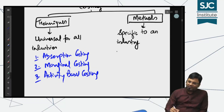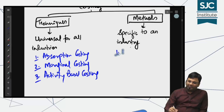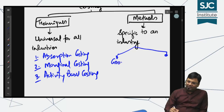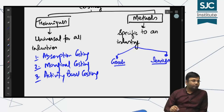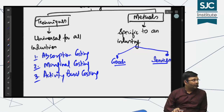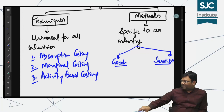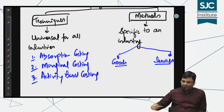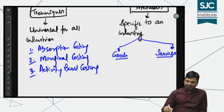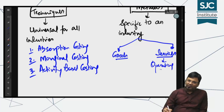Methods of costing में goods और services के लिए दो पार्ट निकलते हैं। जो नाम services के लिए है उसमें एक ही नाम है — operating costing — यह आपका अलग chapter होता है।